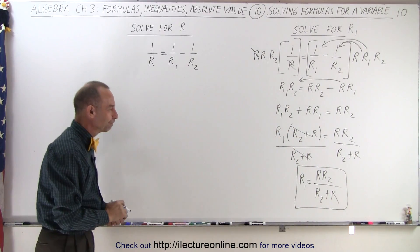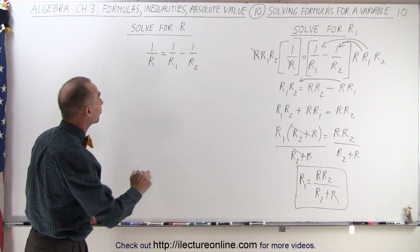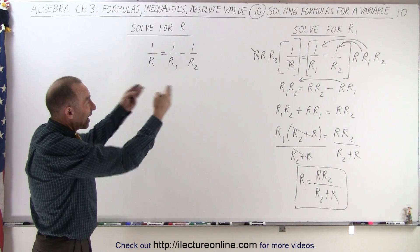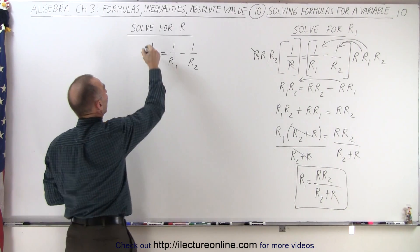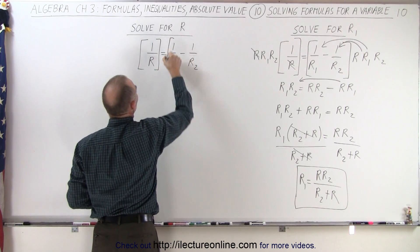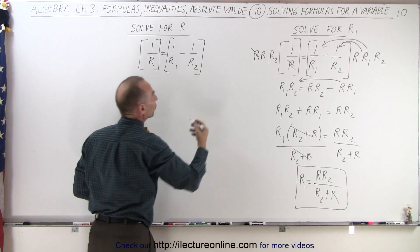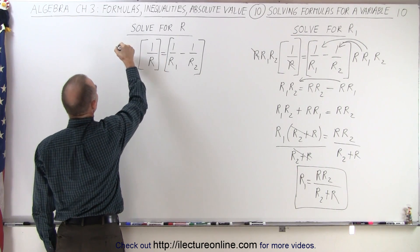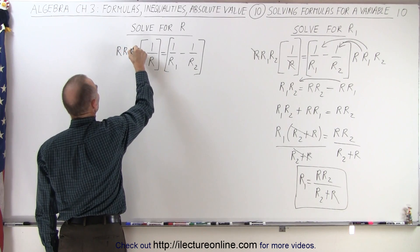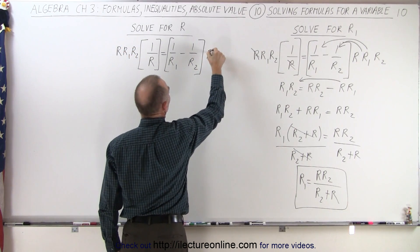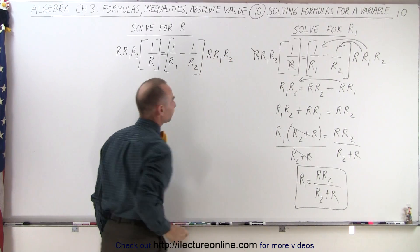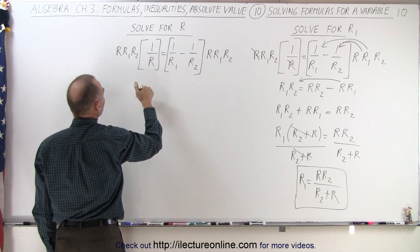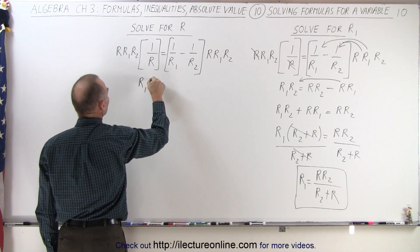Next, on the left side we're solving for R. I'm going to do exactly the same thing as before — get rid of the fractions by multiplying both sides by the lowest common denominator, which is the product of all denominators: R, R1, and R2 on both sides. Multiplying through, the R's cancel out on the left, and we're left with R1 times R2.